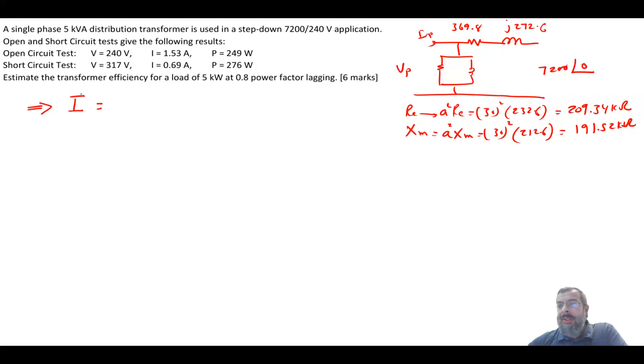So let's find the current I. Now the current I, since we are referring it to the high voltage side, so your I is over A will equal 5000, the power, divided by 7200 times the power factor, which is 0.8, and this will give me 0.87, and of course cosine inverse of 0.8, so this will give me 0.87 angle of minus 36.9. This is your current.